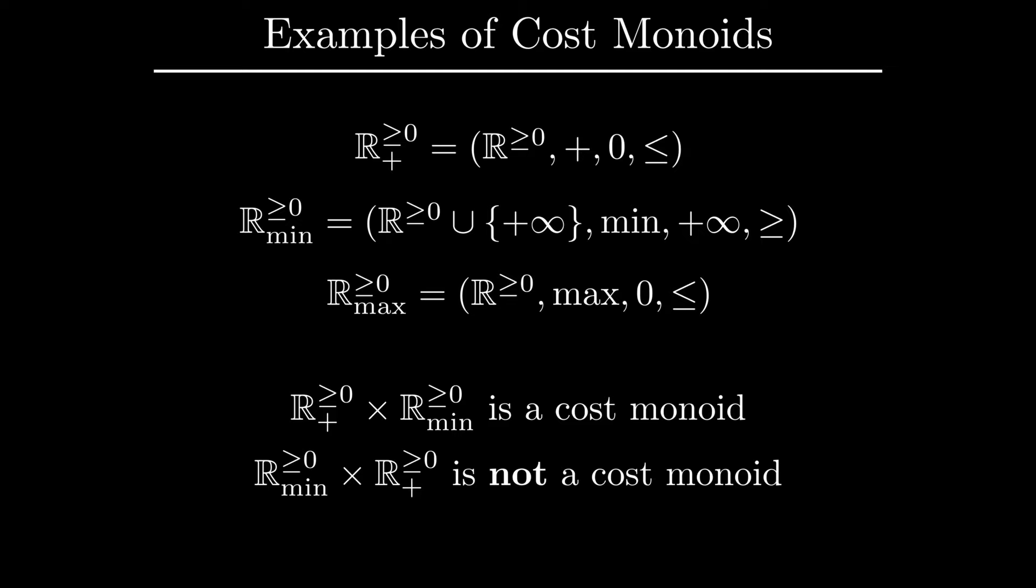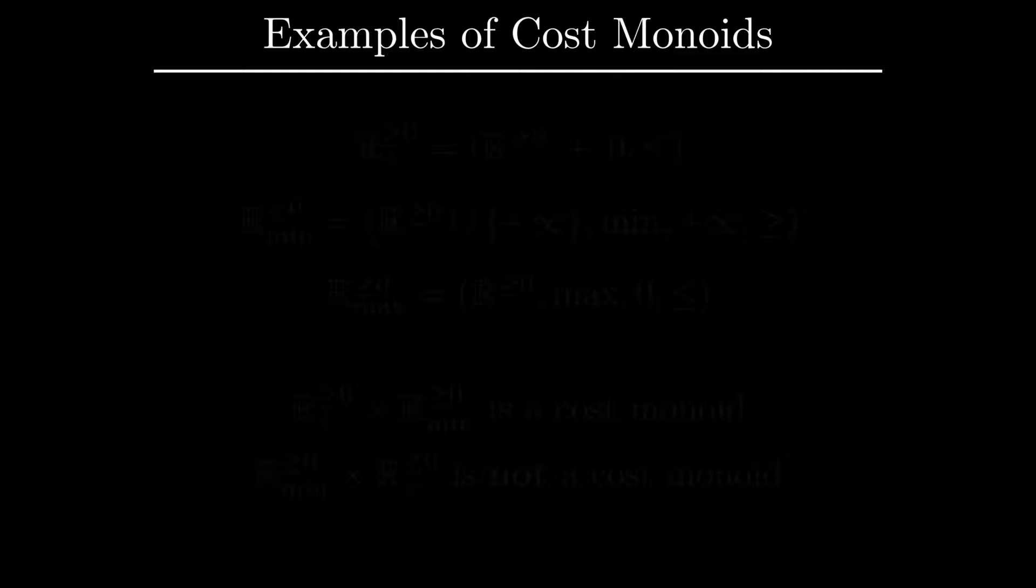For instance, the product of R_plus with R_min is a cost monoid, while the product of R_min with R_plus is not. Note that the product monoid of R_min with R_plus with the lexicographic order is precisely the cost structure we encountered in the earlier example.